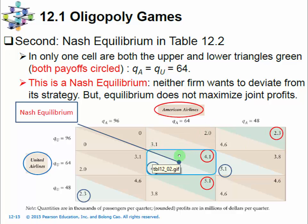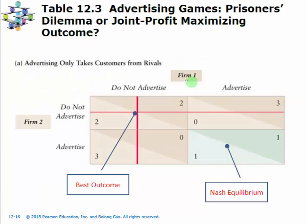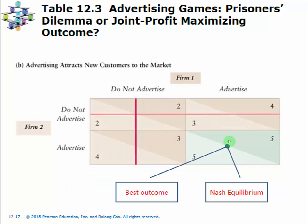This next advertising game basically tells us that whether a Nash equilibrium can be the best possible outcome really just depends on the properties of the game, or the setup of the payoff matrix. If you flip between the two slides, in one slide the Nash equilibrium is different from the best outcome, but in the next slide the Nash equilibrium and the best outcome coincide — they are in the same cell.